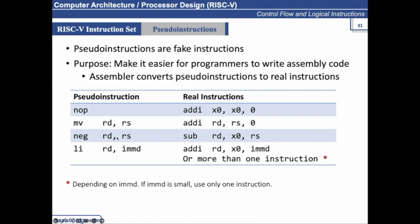And negate, if you have to store the negative value of RS into RD, we can perform sub-operation with X0. So X0 minus RS is similar to 0 minus the contents of RS and will be stored in RD.